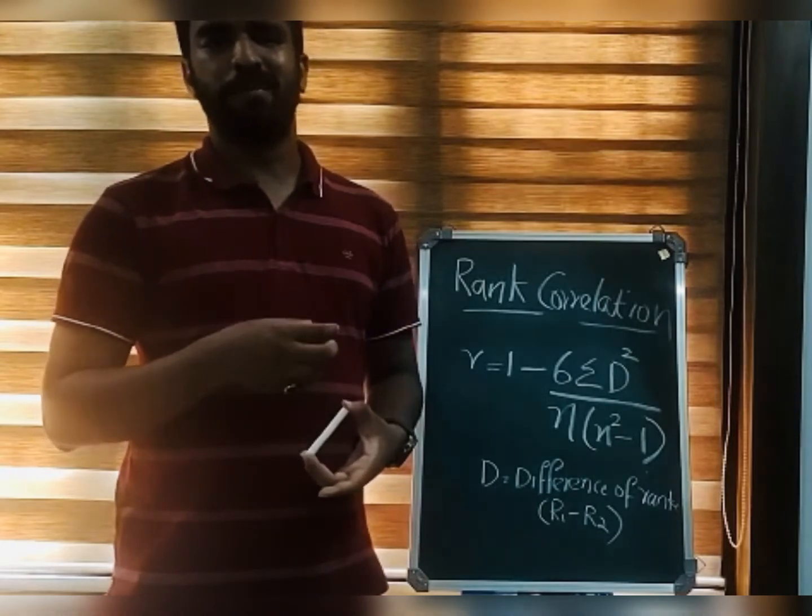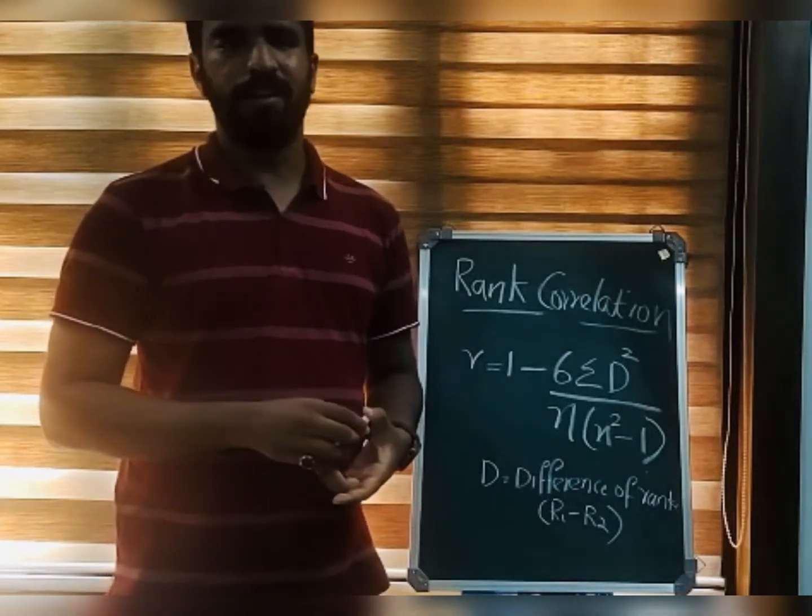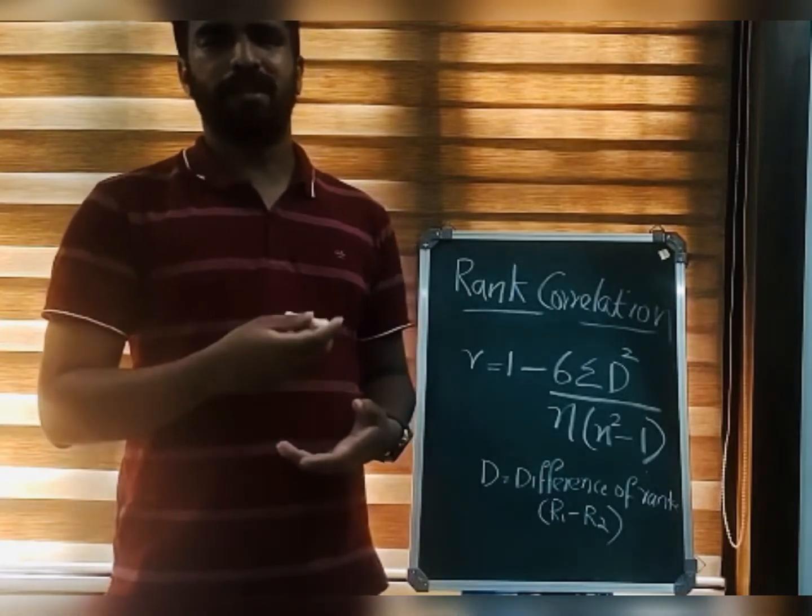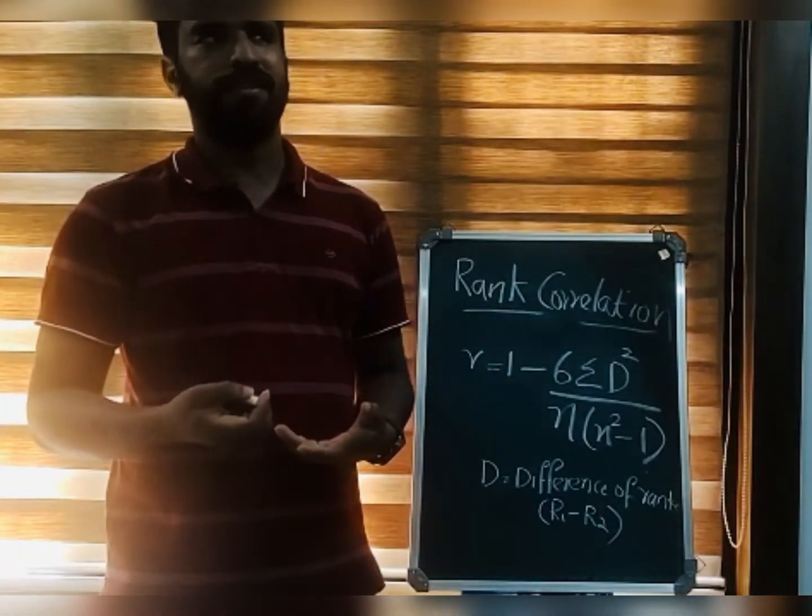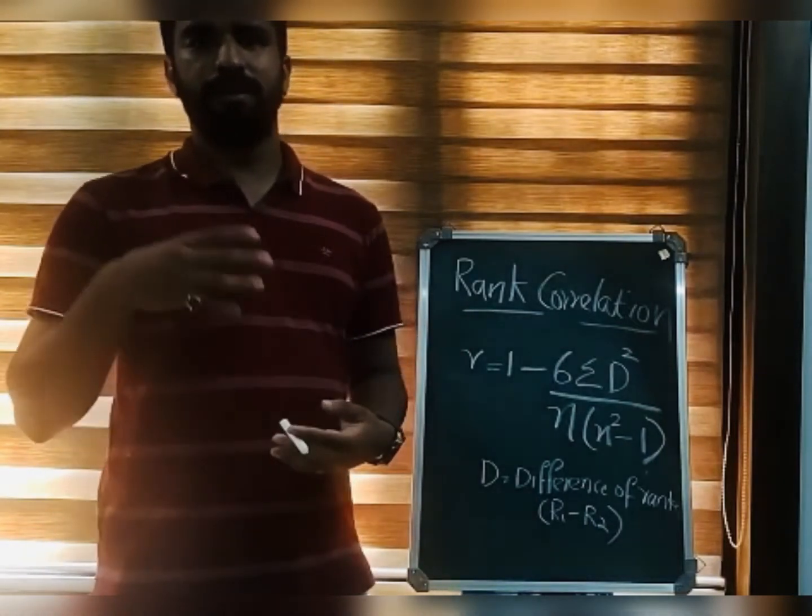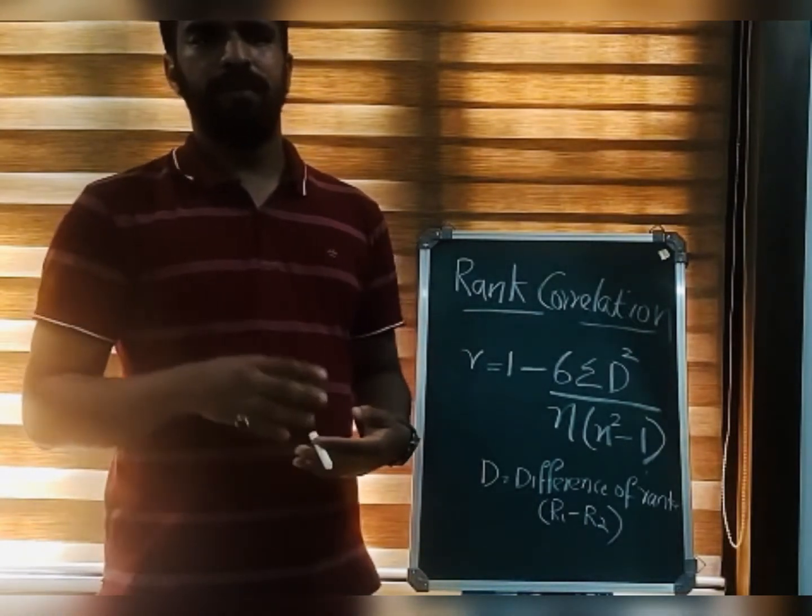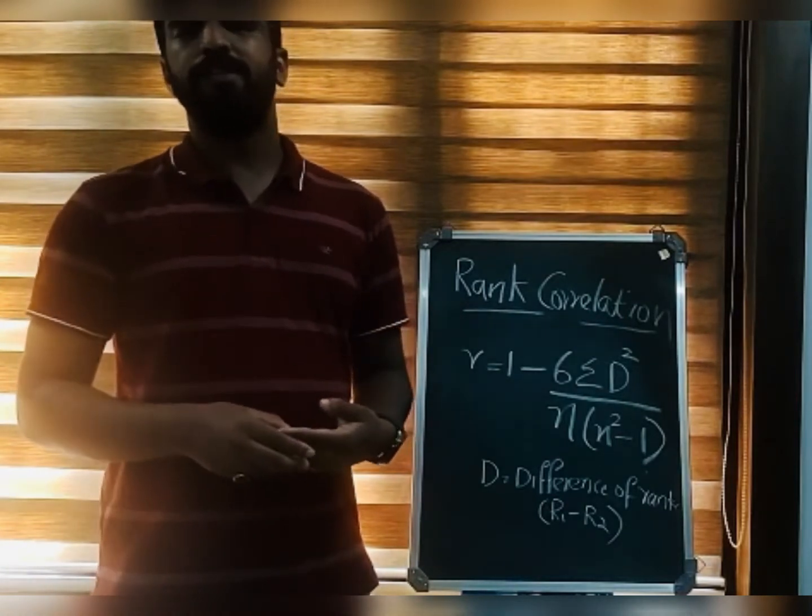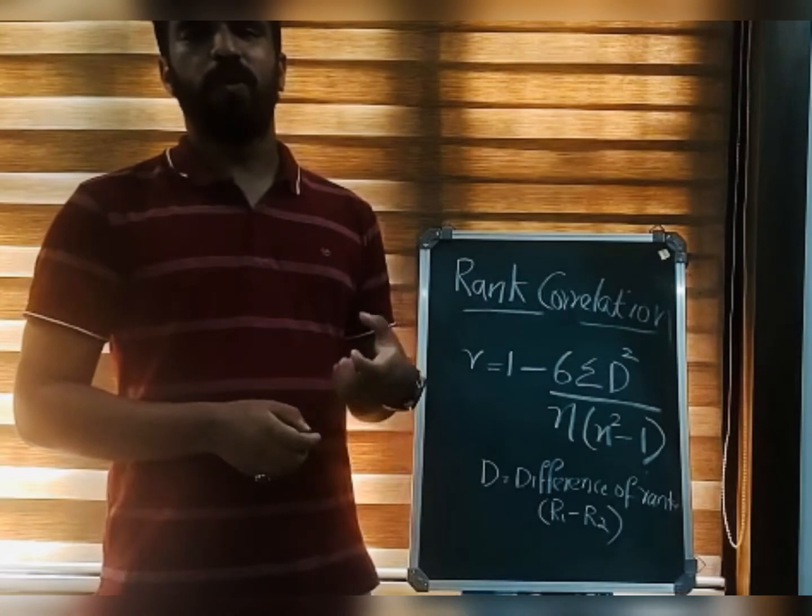There are certain variables which cannot be expressed mathematically or numerically, such as beauty of a particular person, intelligence, etc. We cannot express it in numerical form. Such variables are called qualitative variables.